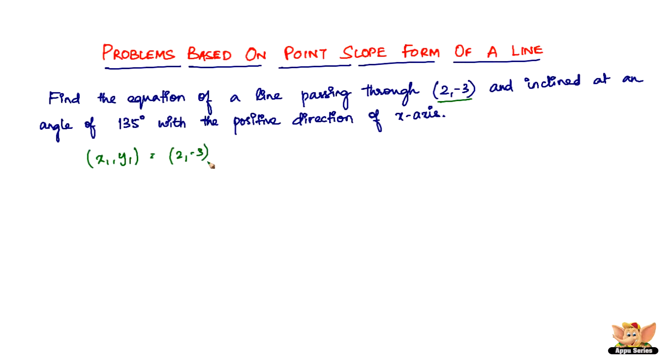We have the angle at which the line is inclined with the positive direction of the x-axis, which is 135 degrees. So m = tan θ. Just substitute the angle in place of θ: m = tan(135°).